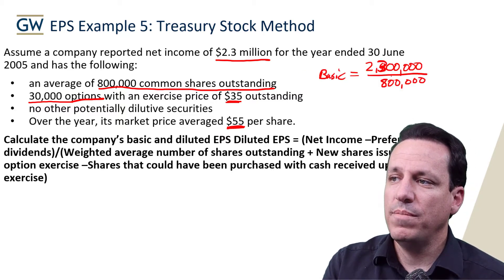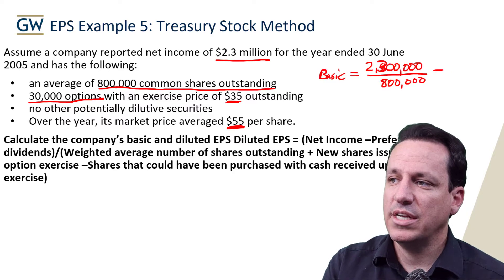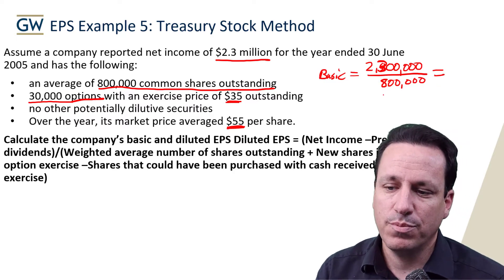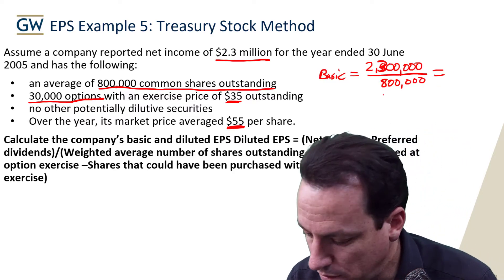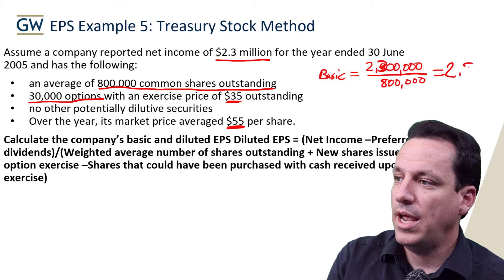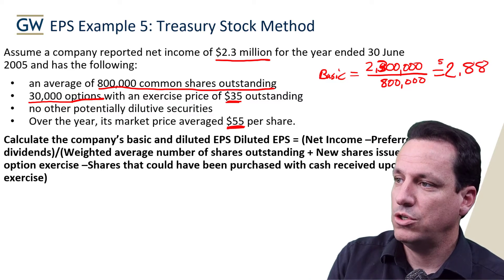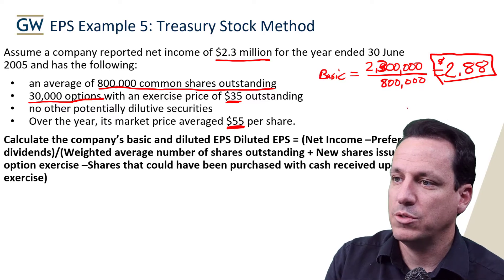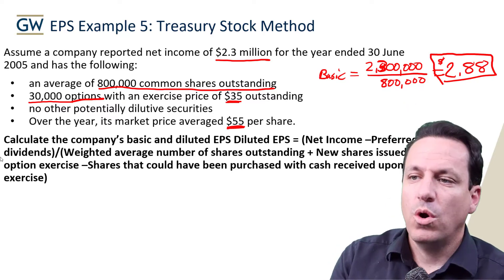For basic EPS, we take $2.3 million over 800,000 shares. That gets us to our basic earnings per share of $2.88 per share.